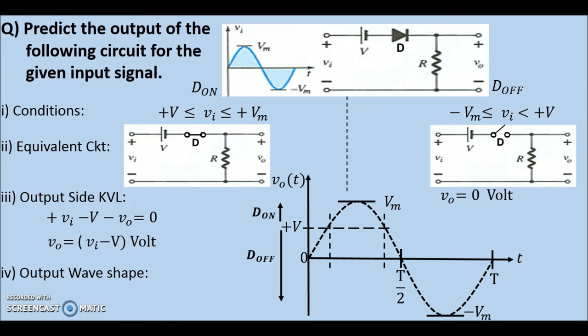Let us begin by plotting dOff condition first. The diode is off as long as the input voltage is less than plus V volts. Therefore, we get a constant line from here to here and from this point to this point. Now for dOn condition, V output is equal to Vi minus V. Therefore, the entire positive peak shifts down with new peak at Vm minus V volts. The waveshape in red is the desired output.